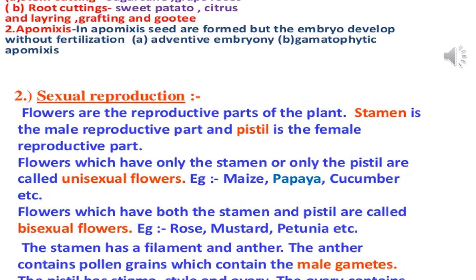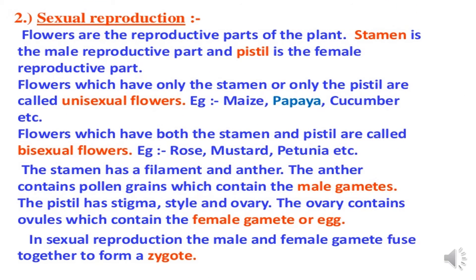We will discuss about sexual reproduction. Sexual reproduction is reproduction in which seeds take place. Flowers are the reproductive parts of the plant. The stamen is the male reproductive part and the pistil is the female reproductive part.